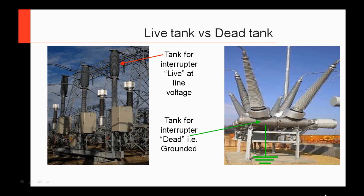What do I mean by live tank and dead tank? Live tank circuit breakers means that the tank housing the interrupter is at line voltage. So the interrupter is inside here and you've got high voltage on both sides — during operation, this tank is at line voltage. Dead tank, on the other hand, is where the interrupter is in a tank that's grounded during service. So during service you can come up and touch it — this is ground — and you're perfectly safe.